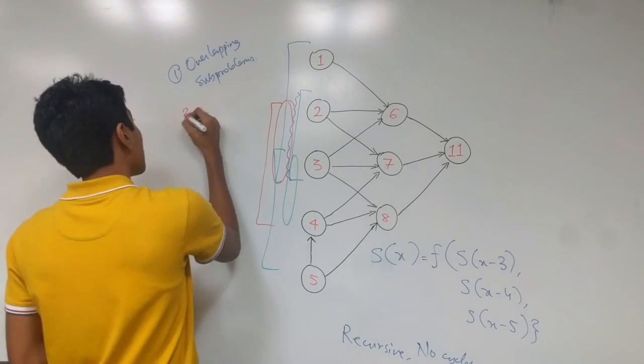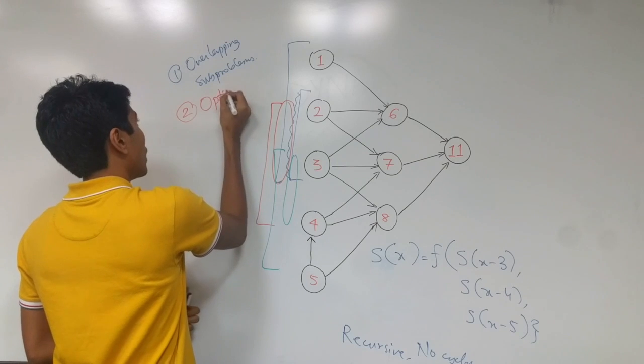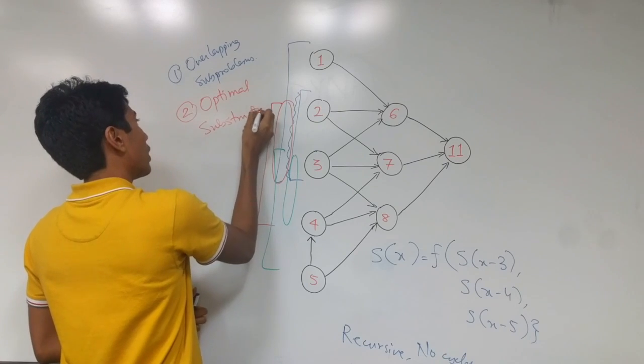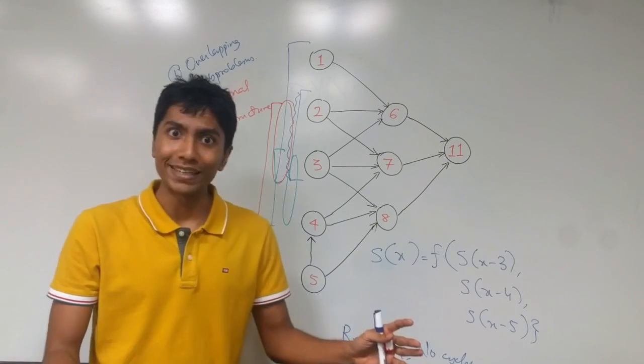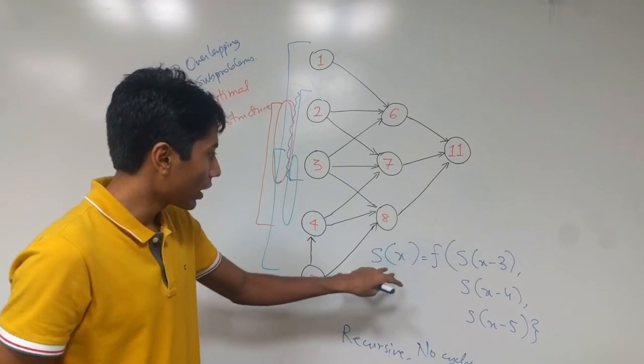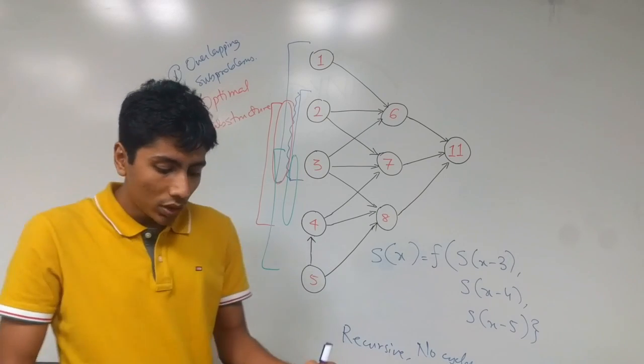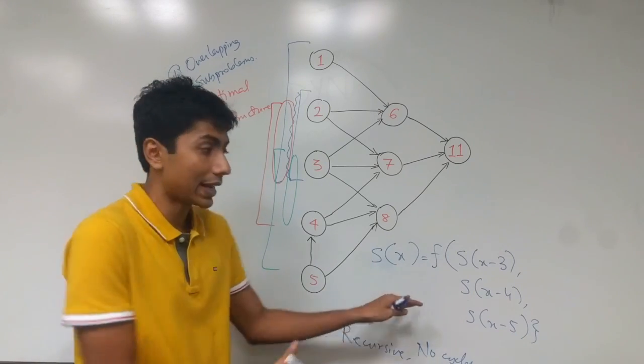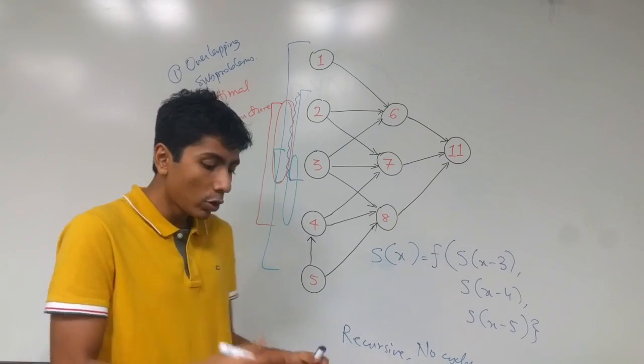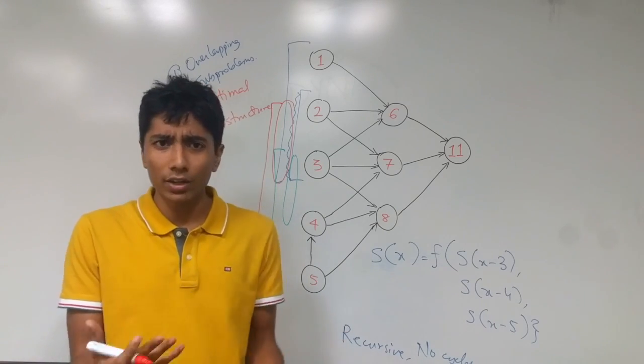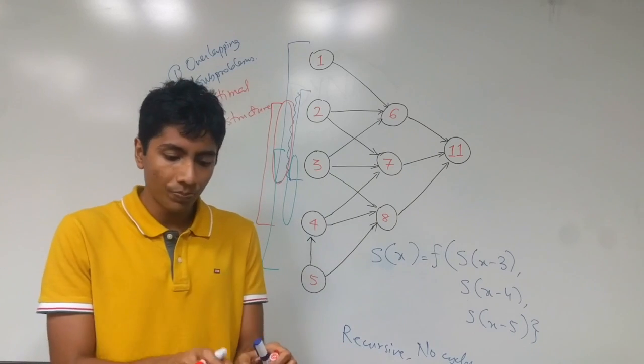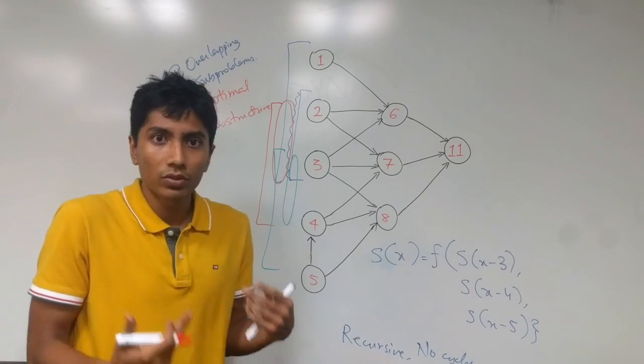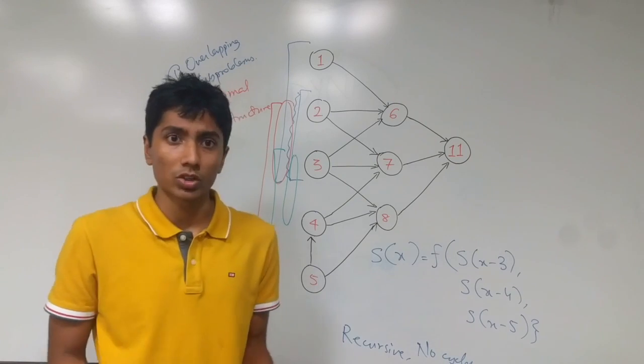The second property is optimal substructure. So what does it mean? It means that if you are at problem state x, then the problems that you need to solve to get here are smaller than the state x itself. You're going to be going for smaller and smaller subproblems. Something like divide and conquer in a way—you break the problems into subproblems and individually solve those. Once you're done, you have the parent problem also solved. So that's exactly what optimal substructure means.